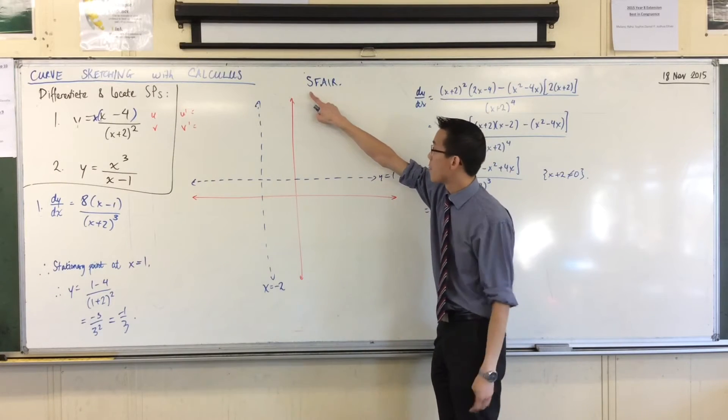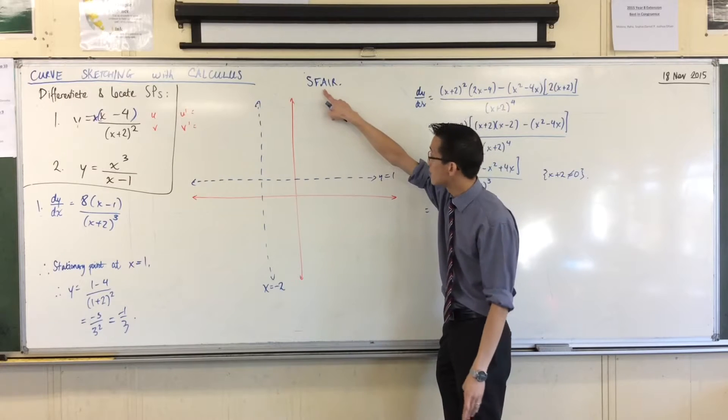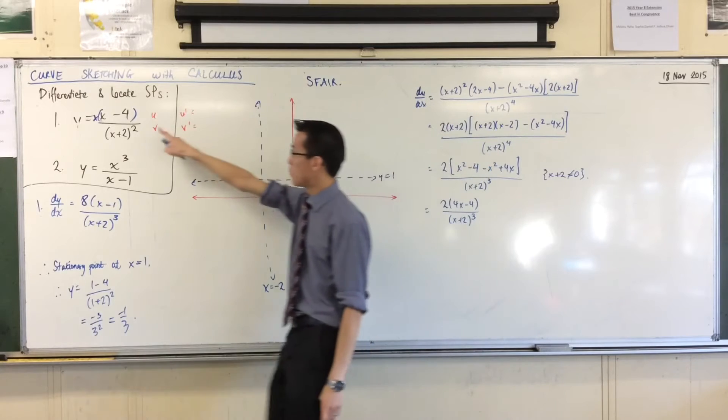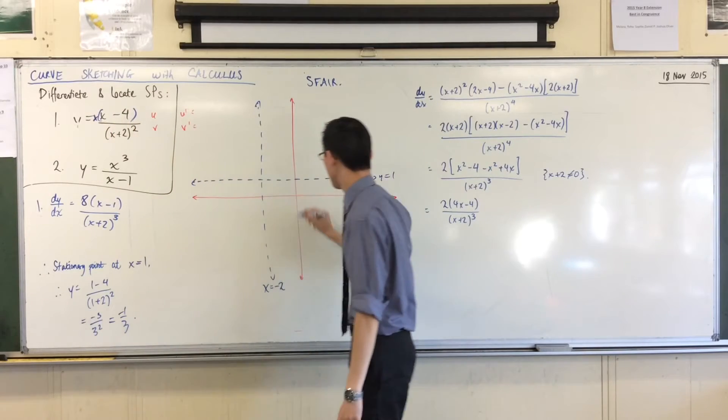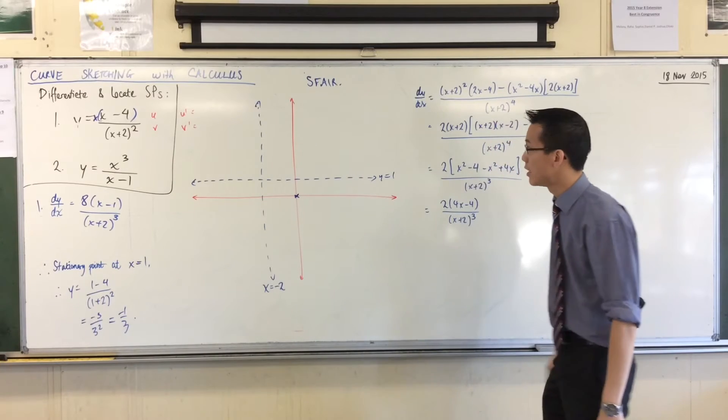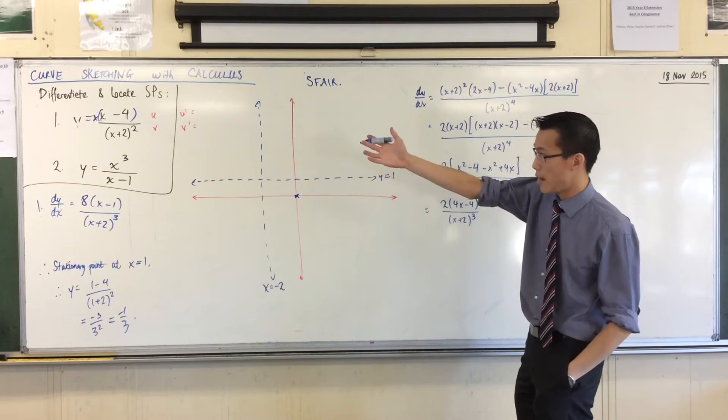Symmetry, don't worry about it. Factorization, done. Asymptotes, done. Intercepts. I'm looking at the numerator, right? So I've got the origin, which means I've got the y-intercept for free as well. And I've got x equals 4.